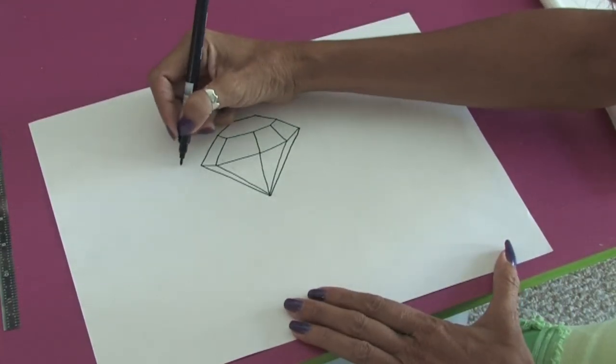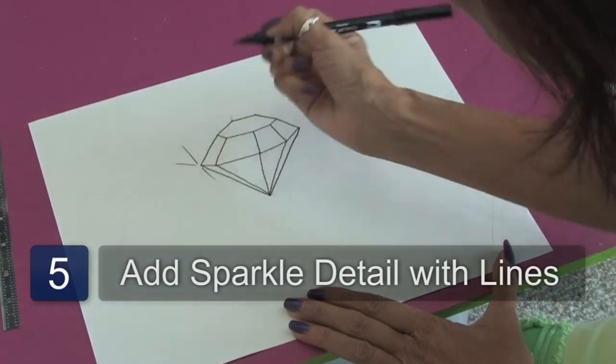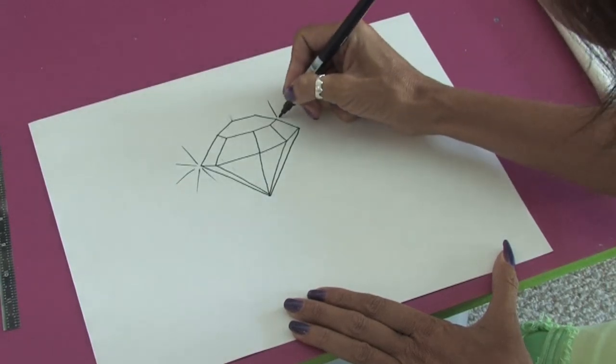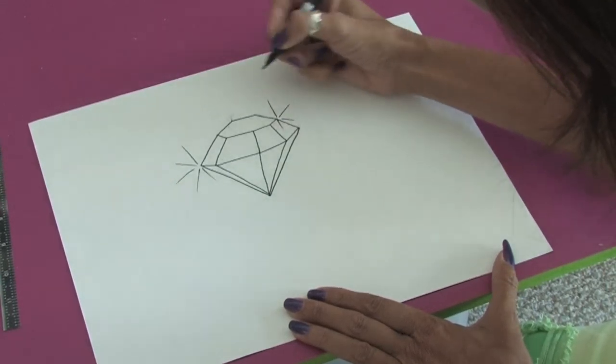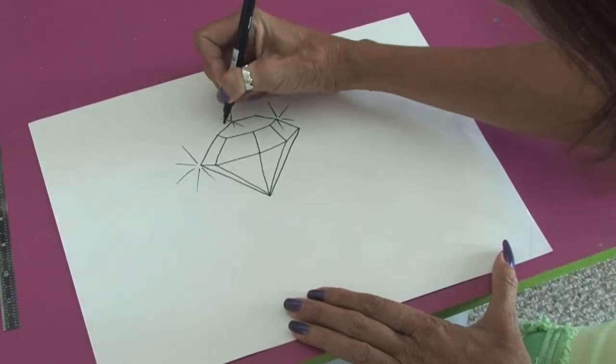And of course diamonds are very sparkly. So what you could do to get the sparkle is take your marker and do some lines coming out like this. And you can go in the corners where the diamond might sparkle.